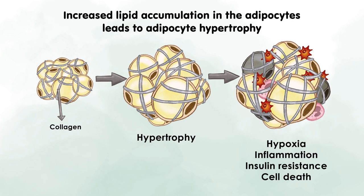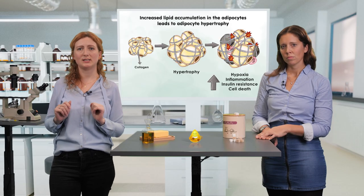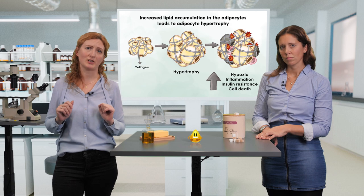Fibrosis limits access to oxygen, a condition also called hypoxia. In turn, hypertrophy leads to cell death, inflammation, and insulin resistance in adipocytes.